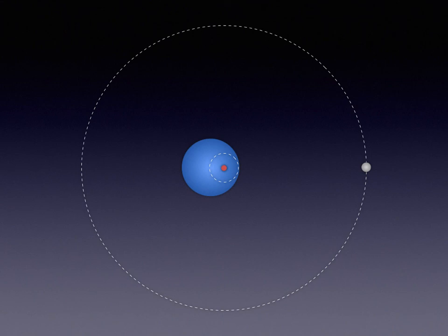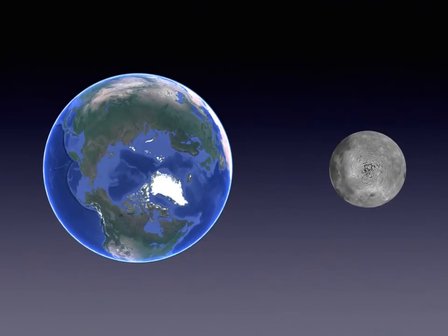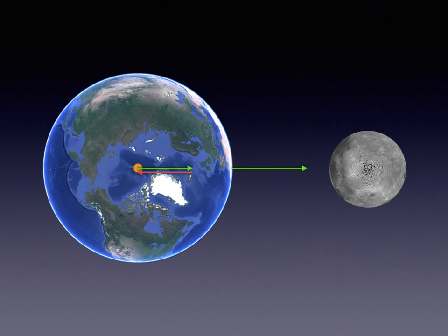So the Moon is in freefall toward the Earth, and the Earth is in freefall toward the Moon. Since the Earth is in freefall, the force of the Moon's gravity is being canceled by the force of Earth's acceleration. But if the forces cancel, why do we have tides at all? If you are located at the very center of the Earth, the force of the Moon's gravity and the force of Earth's acceleration will cancel each other out. But if you are located anywhere else, the two forces will not cancel completely. At the surface nearest the Moon, the Moon's gravity is stronger than at the center of the Earth because the distance to the Moon is less. But the force of Earth's acceleration has the same magnitude and direction no matter where you are located on Earth. So when we add the two forces, the total force points away from the surface of the Earth.